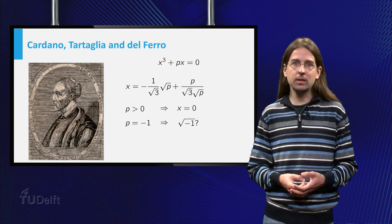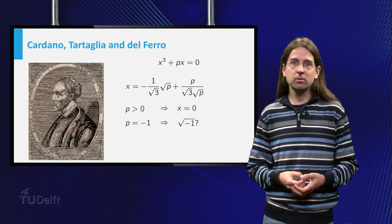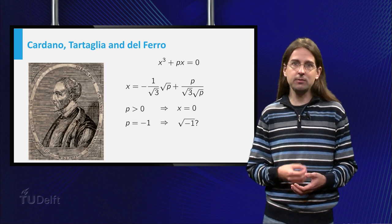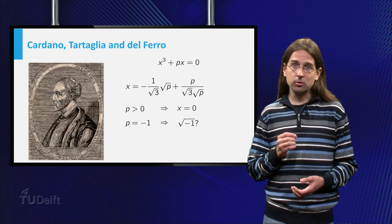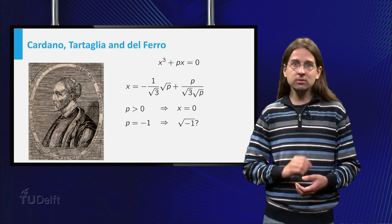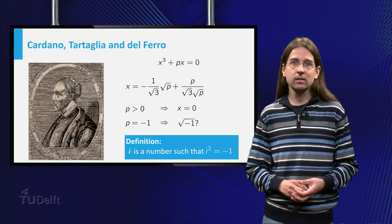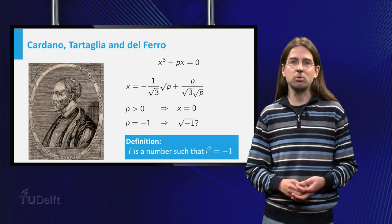This video is about complex numbers, numbers which involve square roots of negative numbers. It turns out the only extra number you need is i, whose square equals minus one.